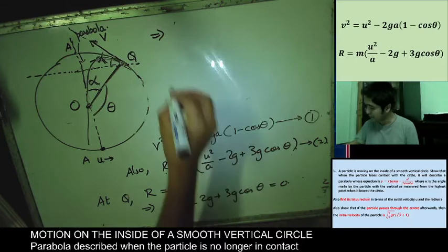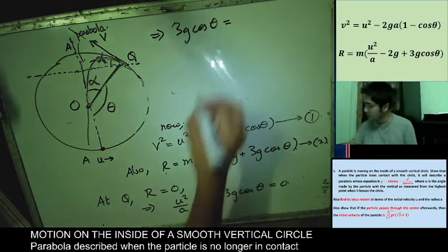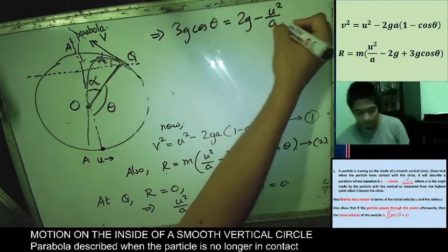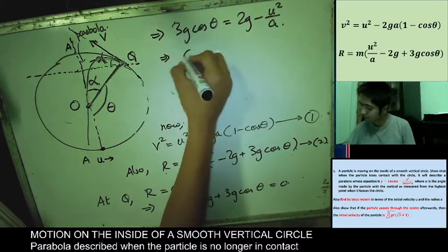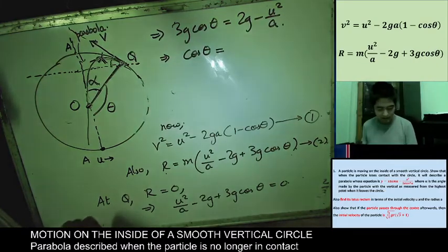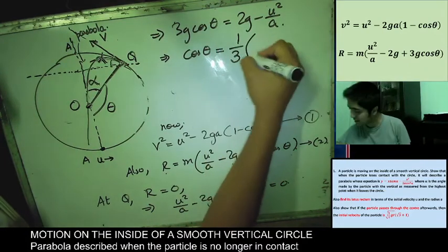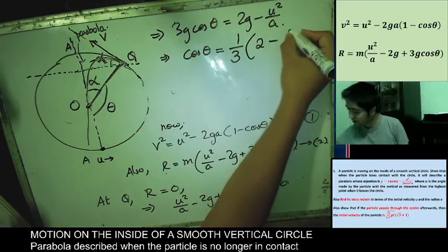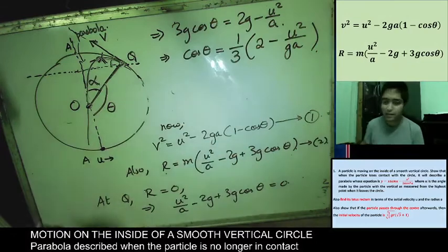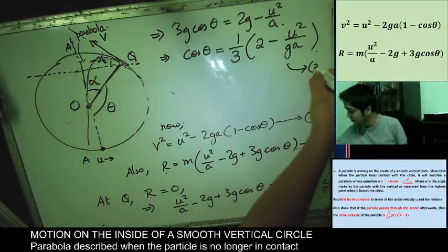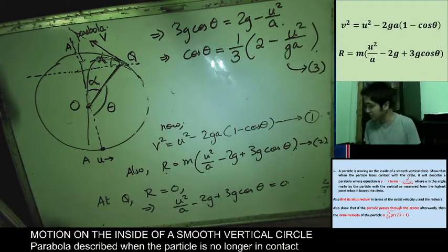From R = 0, we get 3g·cos θ = 2g − U²/a, so cos θ = (1/3)(2 − U²/(ga)). Let us call this Equation 3. We will need this.